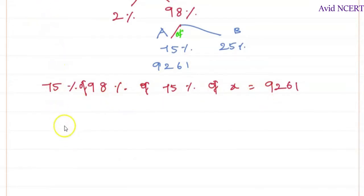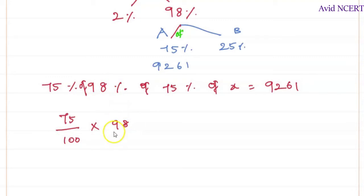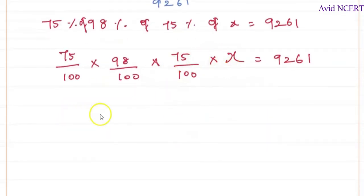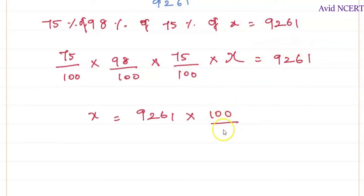Solving this: (75/100) × (98/100) × (75/100) × X = 9261. Keeping X on the left-hand side, X equals 9261 × (100/75) × (100/98) × (100/75). Now we simplify this expression.